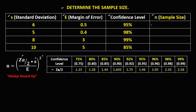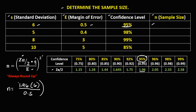To find the sample size for this given, we have n equals the confidence coefficient. Since the confidence level is 95%, the confidence coefficient is 1.96. So we have 1.96 times the standard deviation, which is 6, over the margin of error, which is 0.5, then to the power 2.